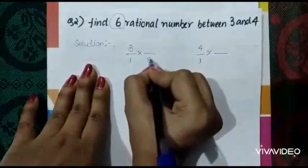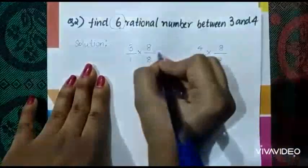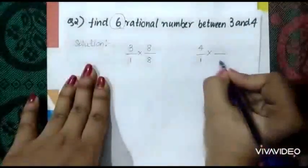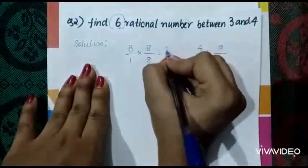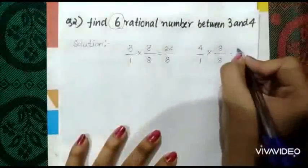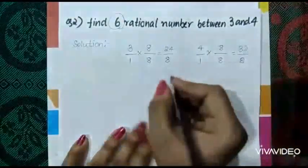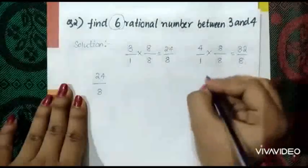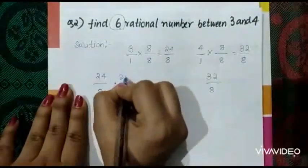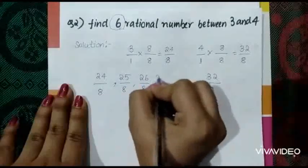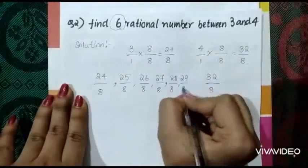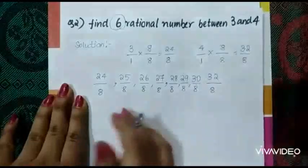Multiply: 8 × 3 = 24, 8 × 1 = 8, giving 24/8. And 8 × 4 = 32, 8 × 1 = 8, giving 32/8. Now write the rational numbers between 24/8 and 32/8. Any 6 rational numbers: 25/8, 26/8, 27/8, 28/8, 29/8, 30/8. We got 6 rational numbers. There are also 31/8 and 32/8 available — there are 8 numbers total between these, and we can pick any 6.